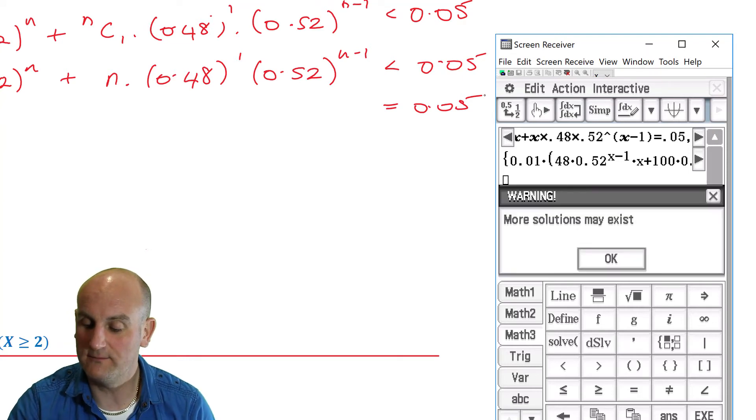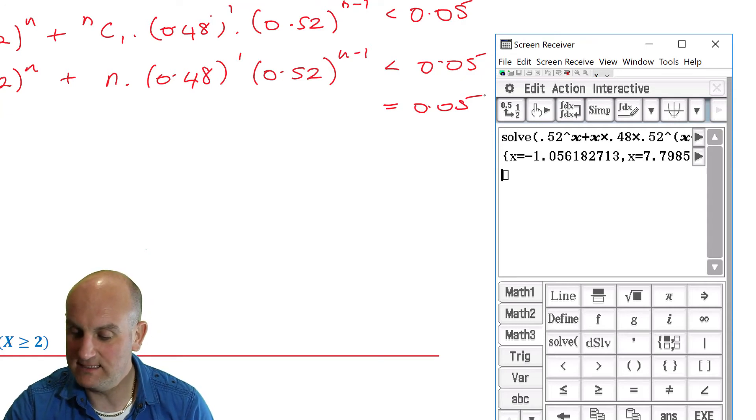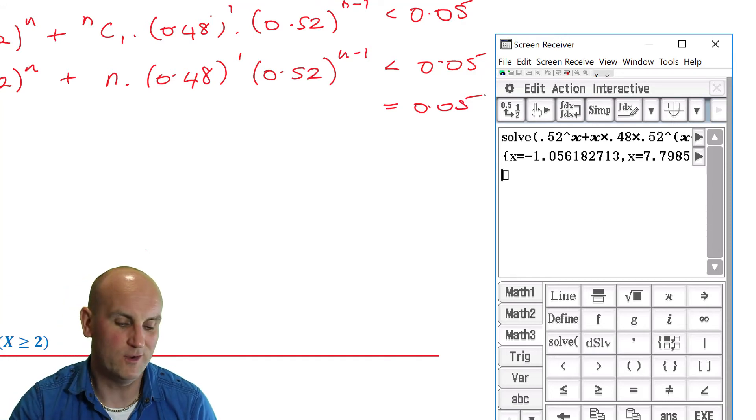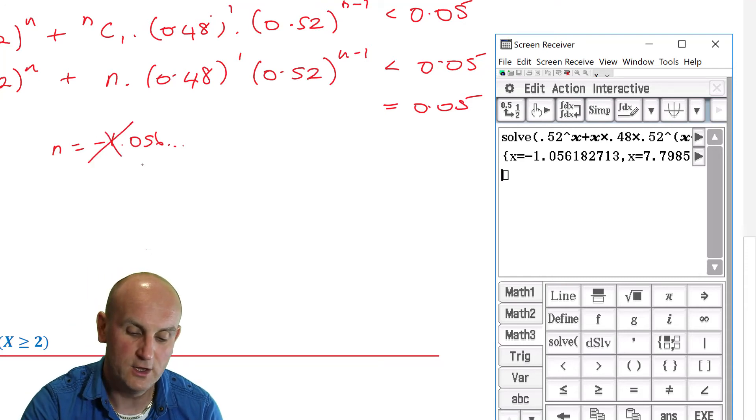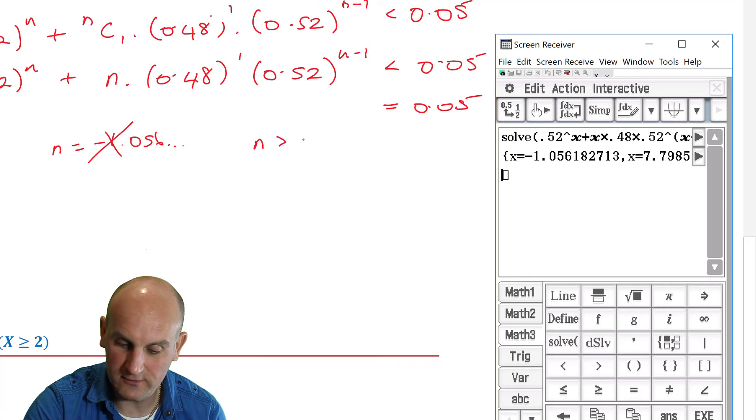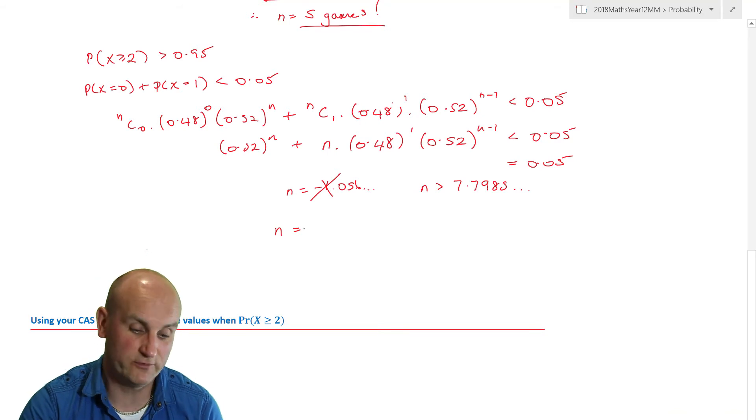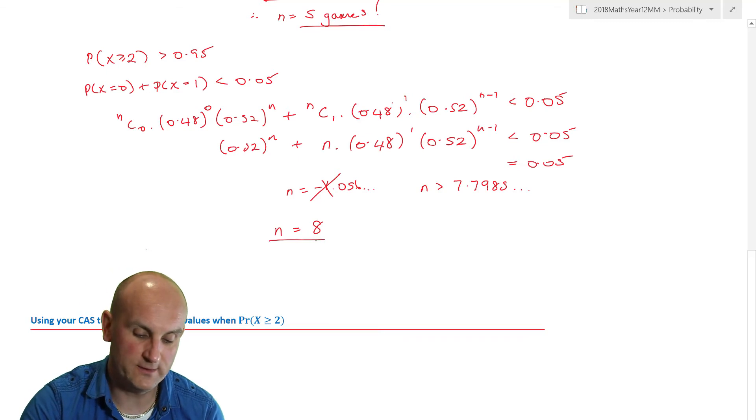Now when I solve it for equals to 0.05, then what you'll notice is my calculator comes up and says more solutions may exist, and what it's giving me is X is equal to minus 1.105. Well we can't have an N value of minus 1.056 - we can't have a negative number of trials, so that's ridiculous. So we now know that N has to be greater than 7.7985, and so the number of trials I have to do to have a probability for two or more wins would have to be eight. Hurrah!